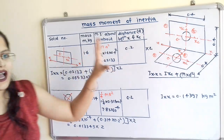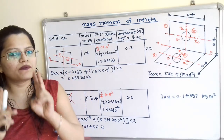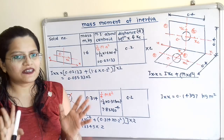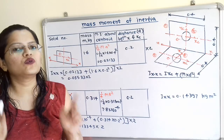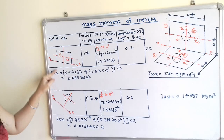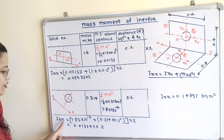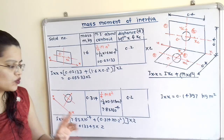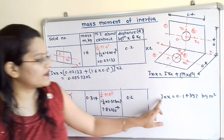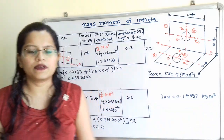This composite body is made up of the addition of mass of two square plates minus the subtraction of mass of the two holes. In the same way, we take the mass moment of inertia of the two square plates minus the mass moment of inertia of the two holes. Subtracting these values gives the final answer: 0.14397 kilogram meter square.